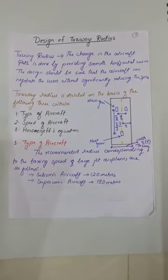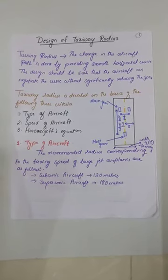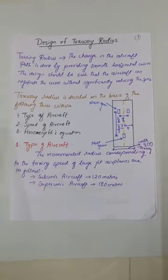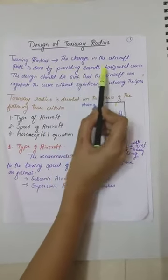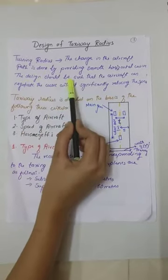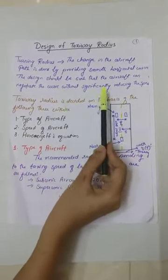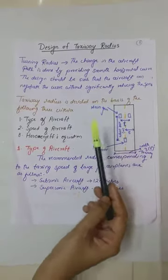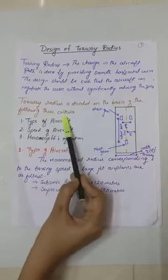Here we will be discussing about how to calculate the turning radius of the simple taxiway. What is turning radius? The change in the aircraft path is done by providing a smooth horizontal curve. The design should be such that the aircraft can negotiate the curve without significantly reducing the speed. Now taxiway radius is decided on the basis of the following three criteria.